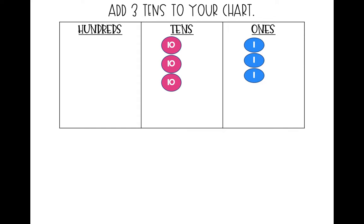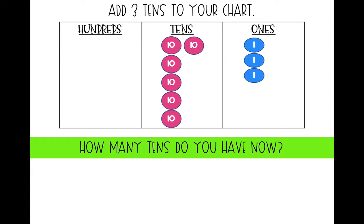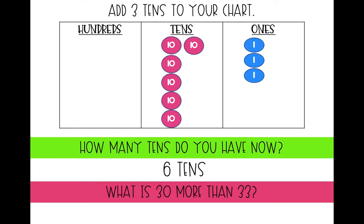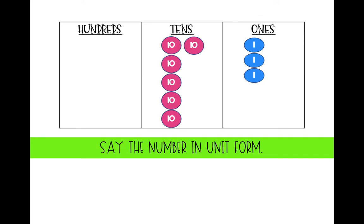Now add three tens to your chart. How many tens do we have now? We have six tens now. What is 30 more than 33? Remember, we just showed it on our place value chart. 30 more than 33 is 63. Let's say our number in unit form: six tens, three ones.